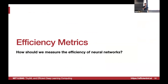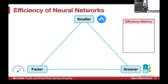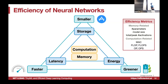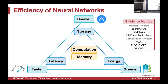Now let's talk about efficiency metrics for neural networks. There are different aspects that cannot all be achieved simultaneously: smaller model (storage), faster model (latency and throughput), greener model (energy efficiency), all while maintaining accuracy. Key metrics include memory-related metrics — number of parameters, model size, total and peak activation size — and computing-related metrics: MAC, FLOP, FLOPs per second, and OPs per second.